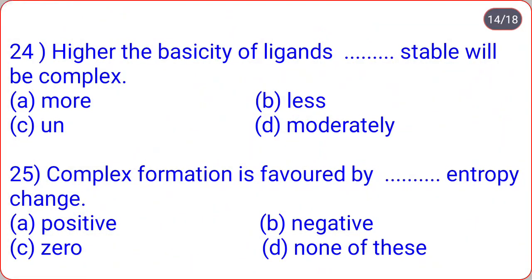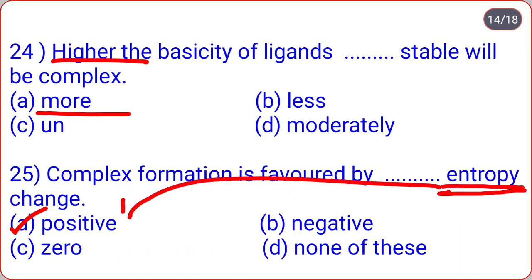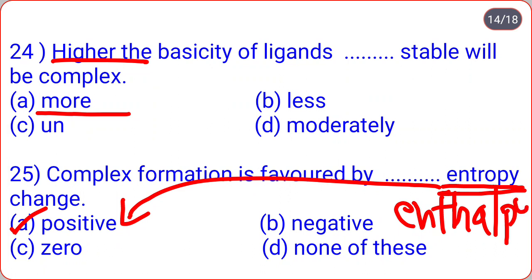Higher the basicity of ligands, more stable will be the complex. Complex formation is favored by positive entropy change — correct answer: positive. Remember: entropy change must be positive, while enthalpy change must be negative for complex formation.